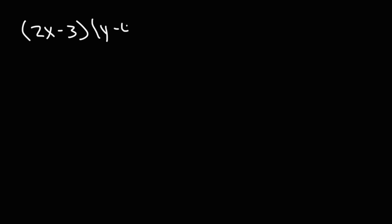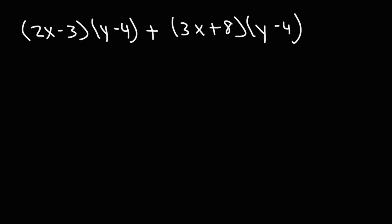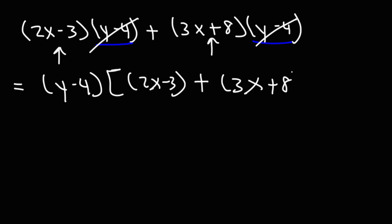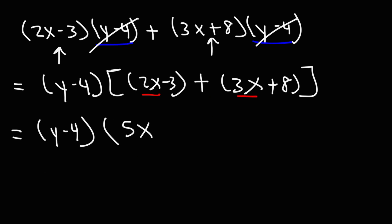Based on that example, try this one: (2x minus 3)(y minus 4) plus (3x plus 8)(y minus 4). What is the GCF? The common factor — and also the greatest common factor — is y minus 4. If we factor out y minus 4, we're left with 2x minus 3 from the first term and 3x plus 8 from the second term. Now we need to combine like terms: 2x plus 3x gives us 5x, and negative 3 plus 8 gives us positive 5.